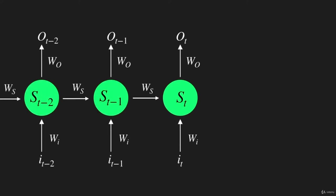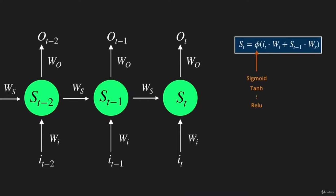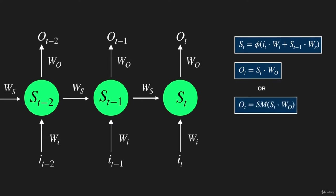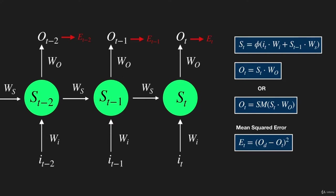Let's unfold the model. This model has three time steps, where the first step is at t minus 2 and the final step is at t. To obtain the state at step 3, we use an activation function — this could be sigmoid, tanh, relu, or many others. We multiply the input IT by its corresponding weight WI, and add it to the product of the previous state multiplied by WS. The output vector is calculated by obtaining the linear combination of the states with their corresponding weight matrices WO. Depending on the application, the output could also be computed with a softmax function.